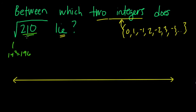That means that 210 is above 14. So if we plot 14 here. And I know that 15 squared is equal to 225. So it's below 15.